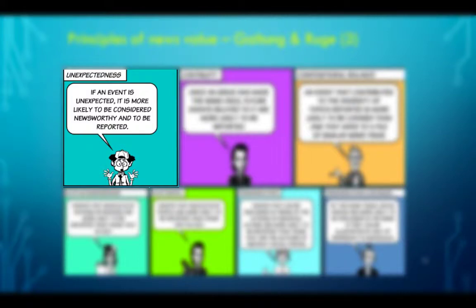Unexpectedness: if an event is unexpected, it is more likely to be considered newsworthy and to be reported. This, in a way, is a contradiction of the previous principle. However, as we say, extremes meet. If the event is totally unexpected — like a natural disaster, an accident, something no one had any inkling was going to happen, like the September 11 attacks, for example — then this unexpectedness will alert journalists and they will cover it better, because it is a surprise to them and also to their audience.